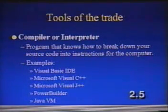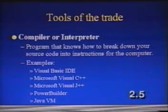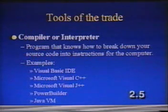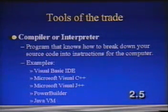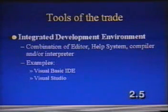A compiler or interpreter is also needed to program a computer. This compiler or interpreter is a program that knows how to break down your source code into assembly language instructions that it can give to the computer. Examples include the Visual Basic Integrated Development Environment, Microsoft Visual C++, Microsoft Visual J++, Power Builder, or a Java virtual machine which usually comes with browsers. Integrated Development Environments are simply a combination of editor, help system, compiler, and/or interpreter all wrapped up into one software package. Things like the Visual Basic IDE, Visual Studio, and Delphi are examples of an integrated development environment.